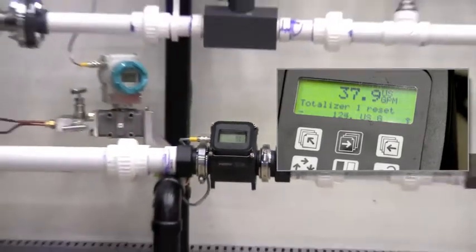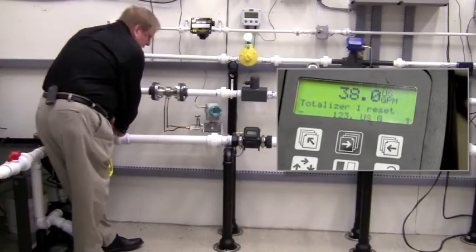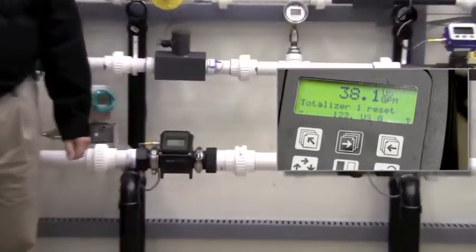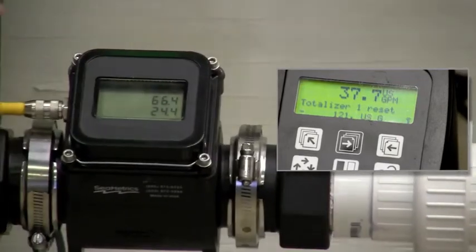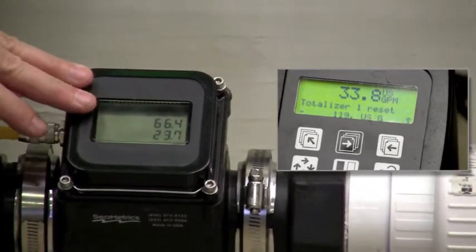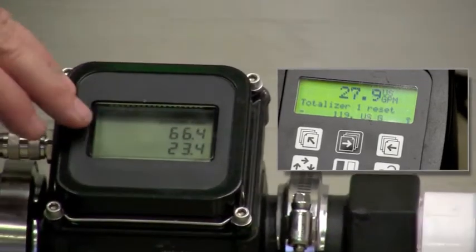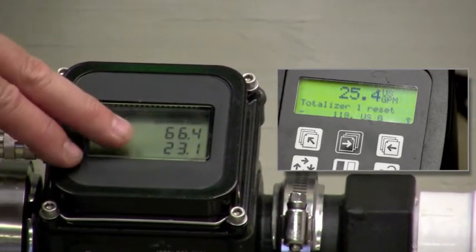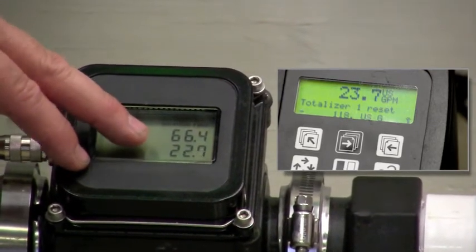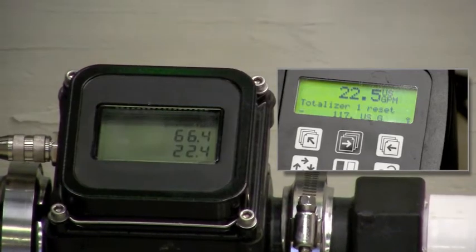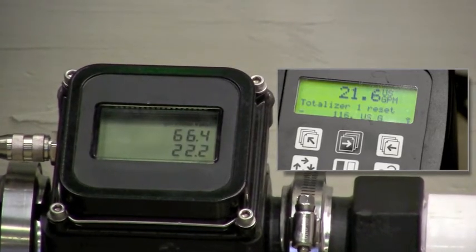Now I'm going to throttle the valve back a bit to reduce the flow in the line and again we'll give it a second to settle in. You can see that our WMP, the flow has dropped to about 22-23 gallons a minute and it tracks right along with the high performance mag.